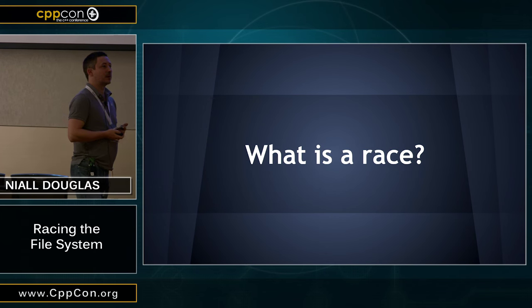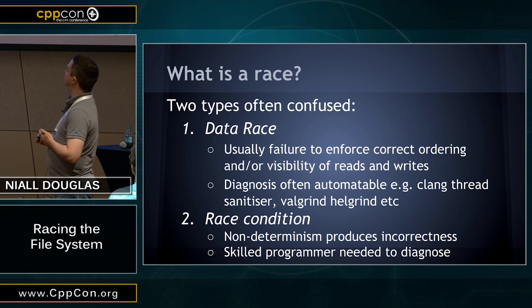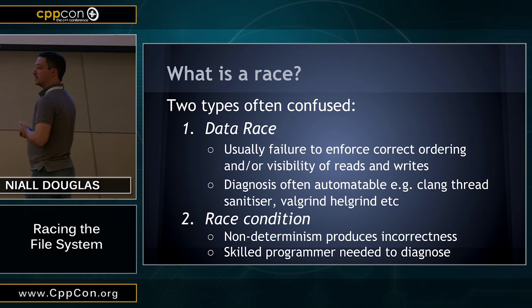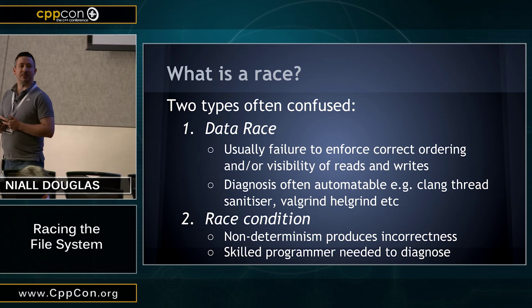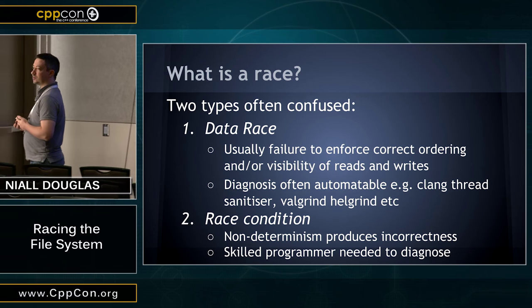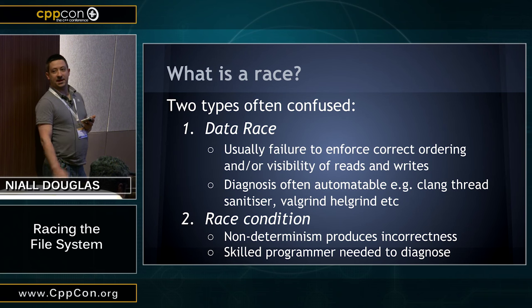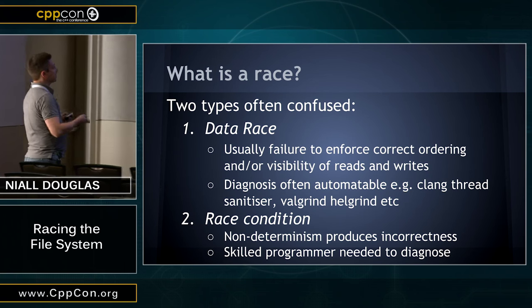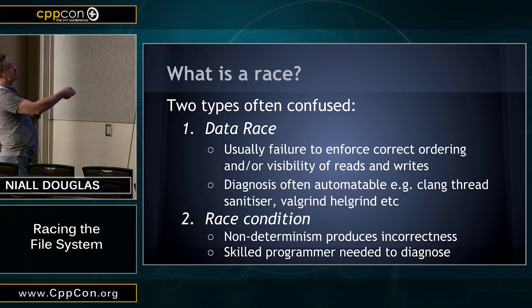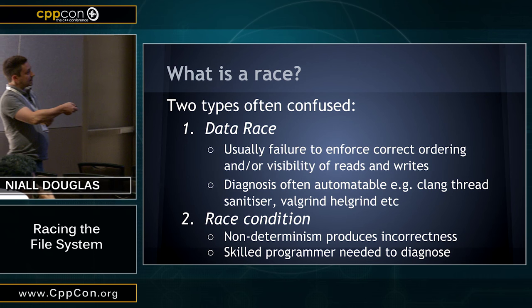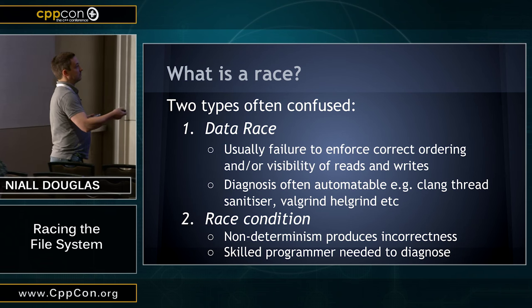So what's a race? There are two types: data race and a race condition. Most experienced programmers don't think much about the difference because they're so interlinked — data races cause race conditions and vice versa. They're actually two separate things. The main difference is that data races can often be diagnosed automatically using tools like thread sanitizer or Helgrind. Race conditions are much harder — there's no real way of automating diagnosis; you need a really experienced programmer to figure it out.